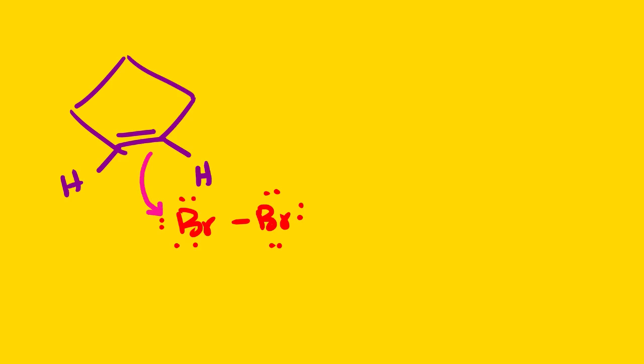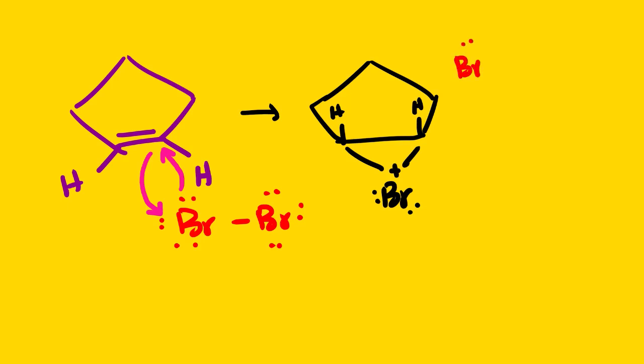So we have movement of electrons and these electrons towards this carbon to form. We have, then we have our remaining Br attacking from the back to form. We have Br and we have Br. You can see that it is anti addition.